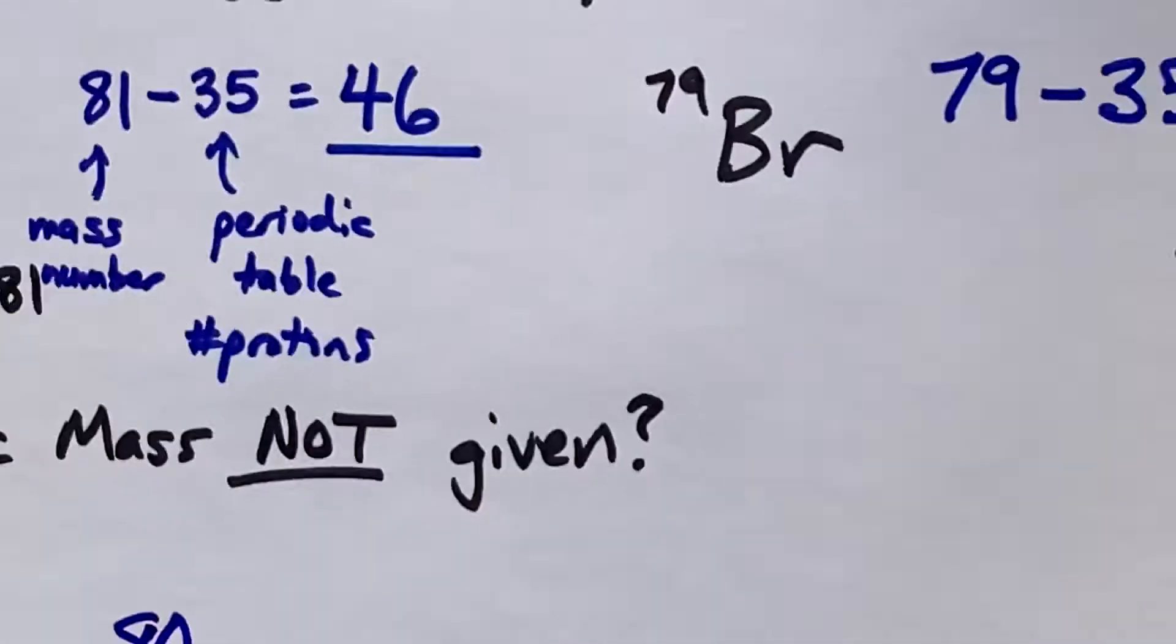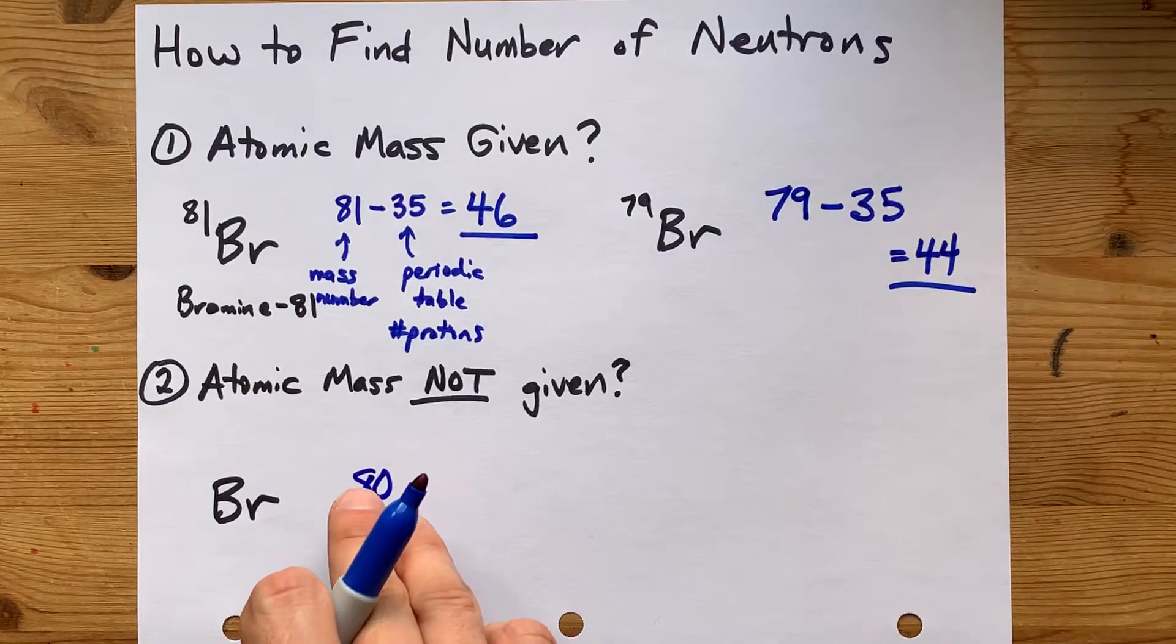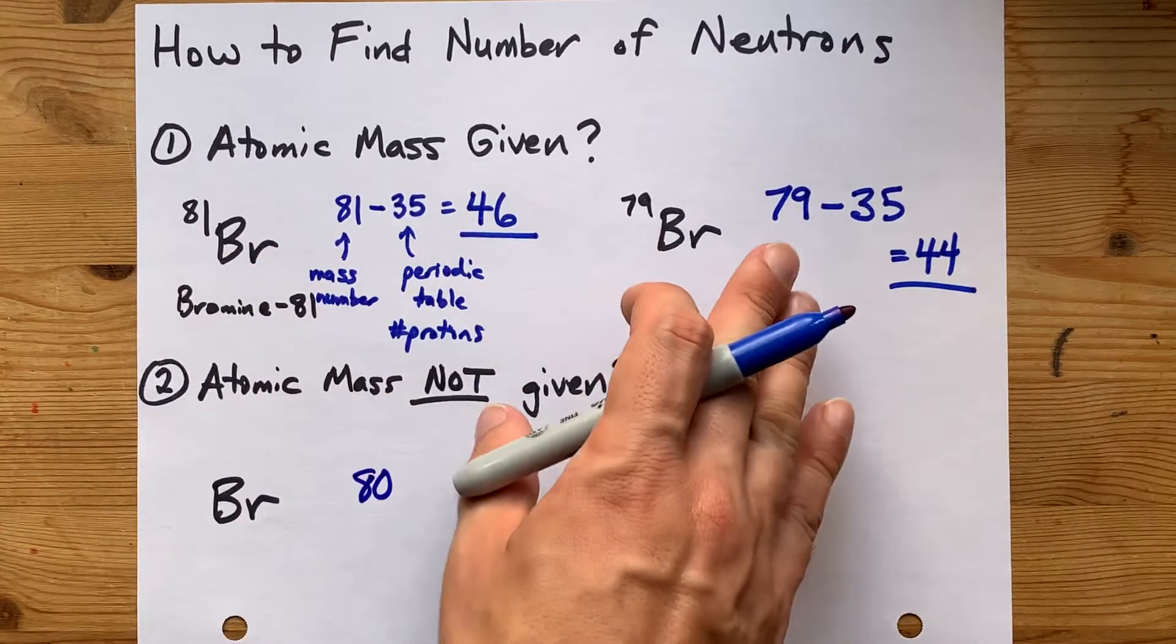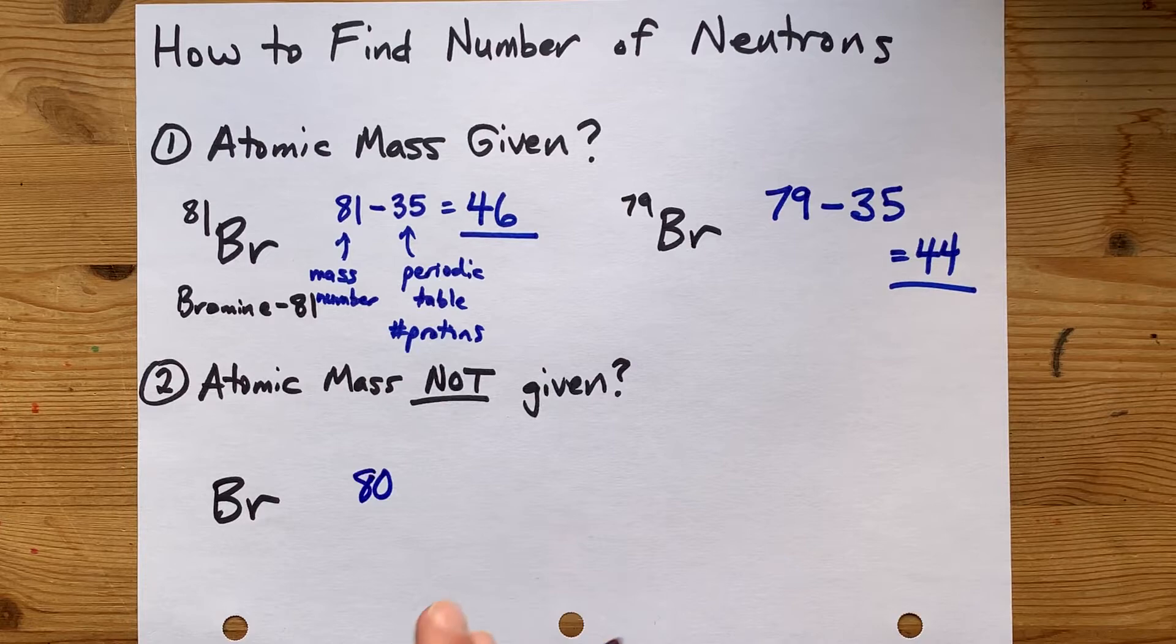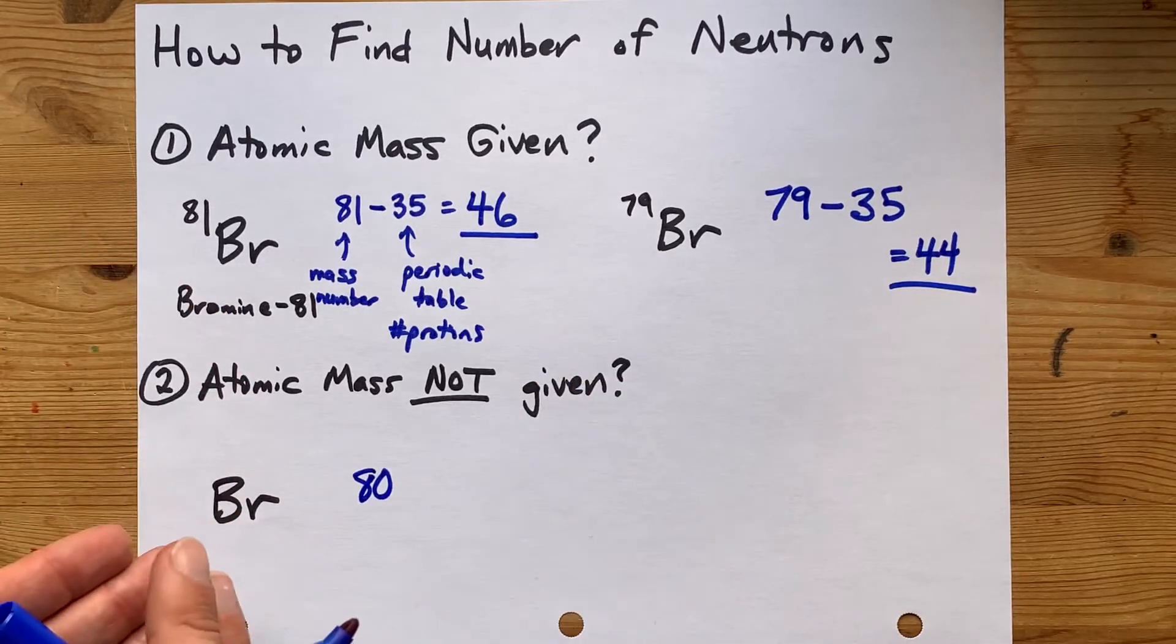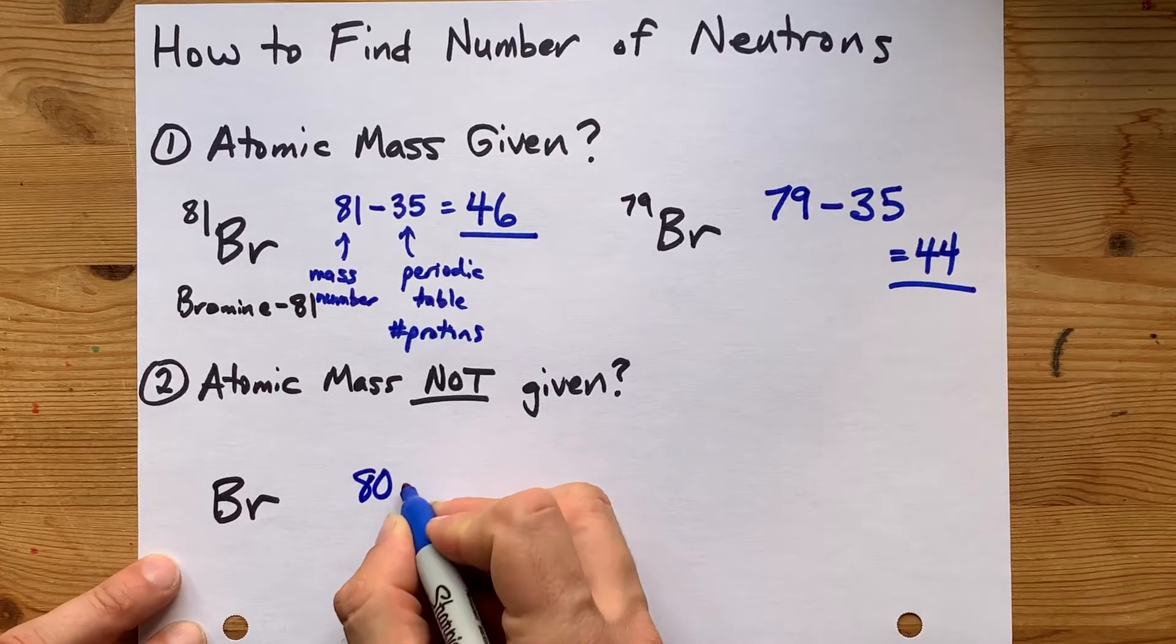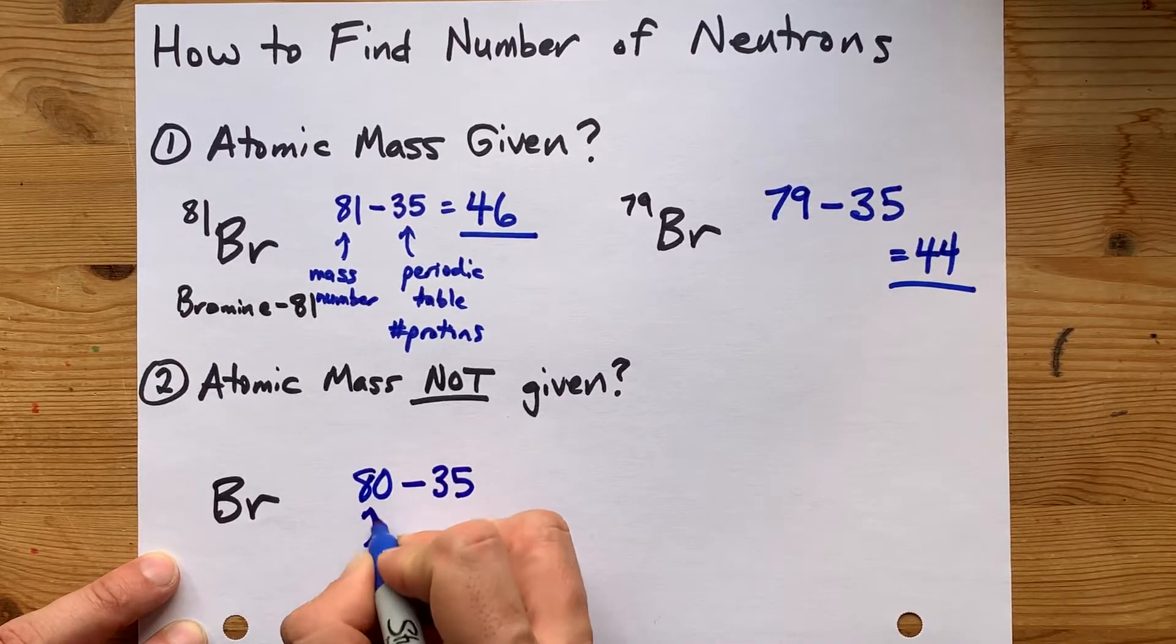Now, in the real world, there are no bromines that have an exact mass number of 80. They're actually all either 81 or 79, but you may not be there yet in your chemistry education. What matters to you is that if your teacher doesn't tell you what the mass is of that particular particle, you've got to use the mass from the periodic table and then subtract the atomic number also from the periodic table.